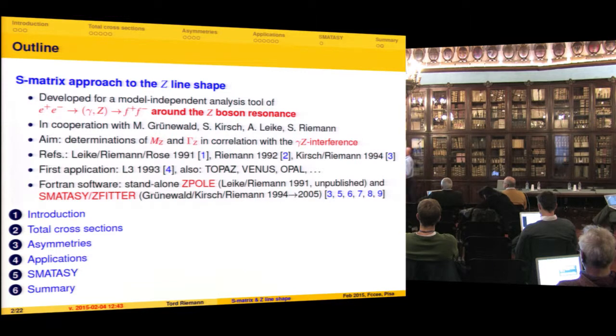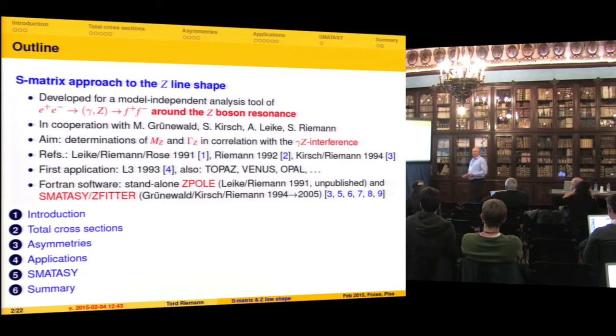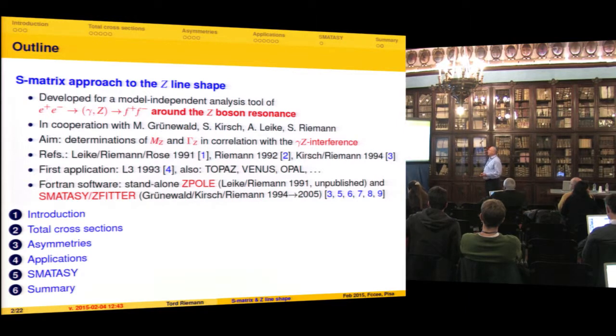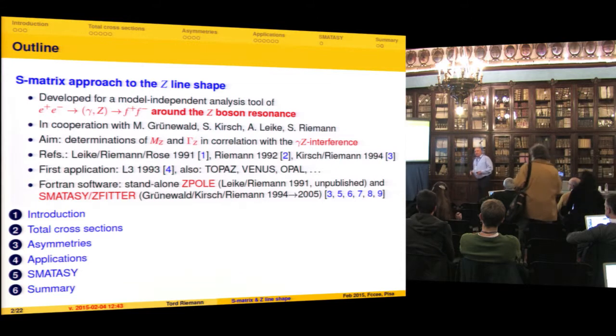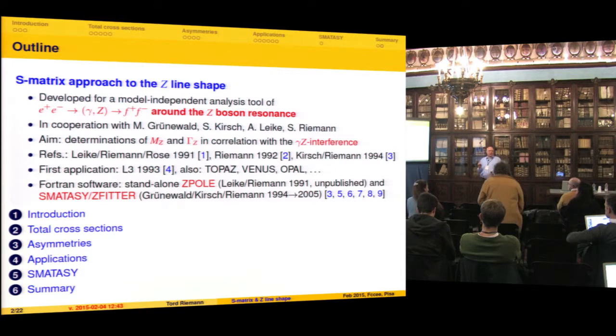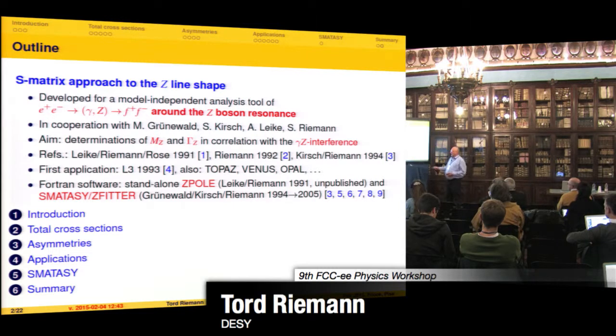Very short summary. This approach was developed for a model-independent description of two-fermion production around the Z-boson resonance in order to extract something from that. But all of this was productive in a physics sense only after it got inserted into the environment of ZFITTER, which is a framework for description of two-fermion physics. After an introduction, I will speak about total cross-sections, then about asymmetries, applications, software, and summary.